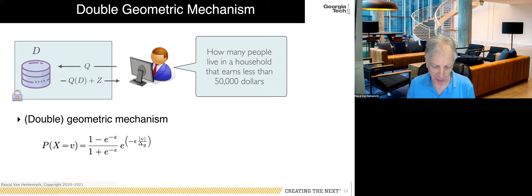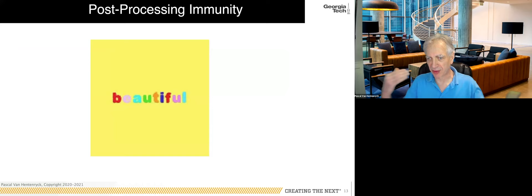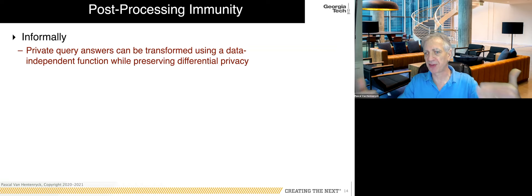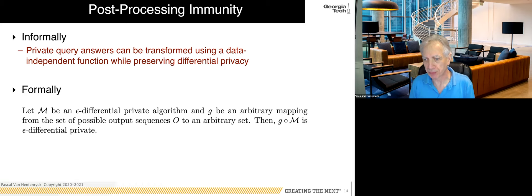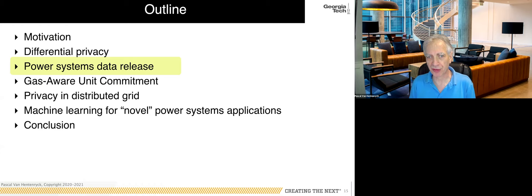One property I really like is post-processing immunity. Informally, if I give you something that is epsilon-differentially private, you can apply any function to it and the privacy guarantees won't change. No additional data you have will help identify individuals or values. Formally, if you compose another function g after the mechanism, the output is still epsilon-differentially private. This is very important for some of the things we'll do.